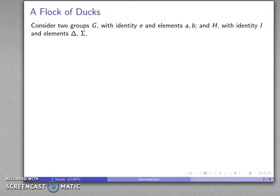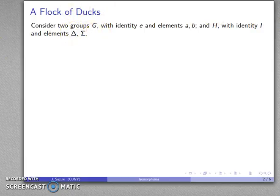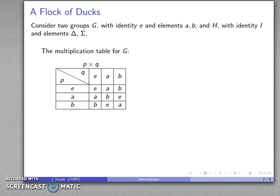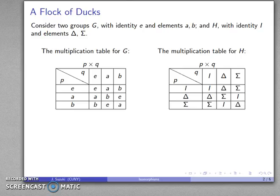Let's consider two groups. We're going to take a group G where the identity is E and the elements are A and B, and a second group H with identity I and elements delta and sigma. Earlier we produced the only possible multiplication table for a group with three elements, and because this is the only possible multiplication table for a group with three elements, when we try to find the multiplication table for H, we find the multiplication table looks like this.